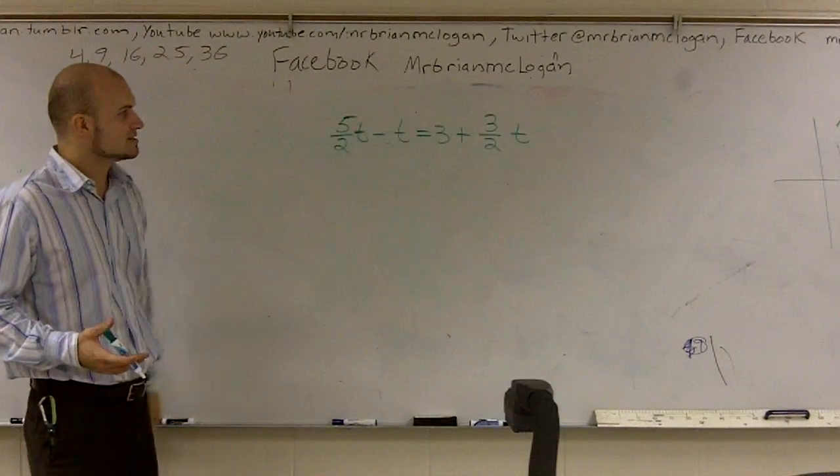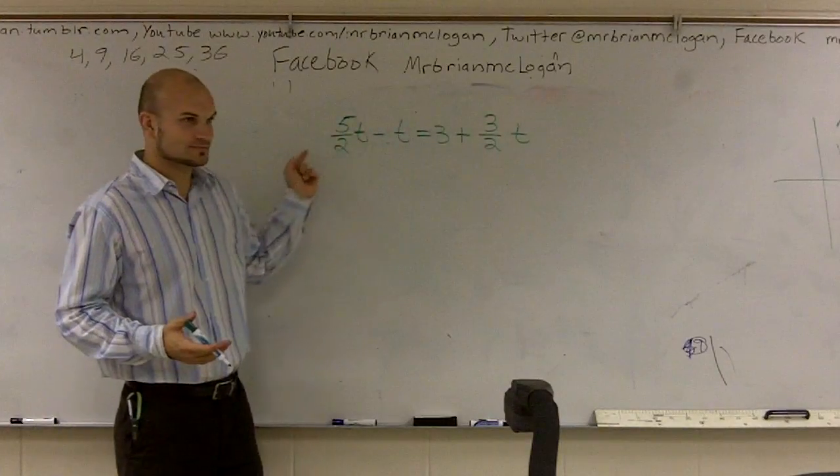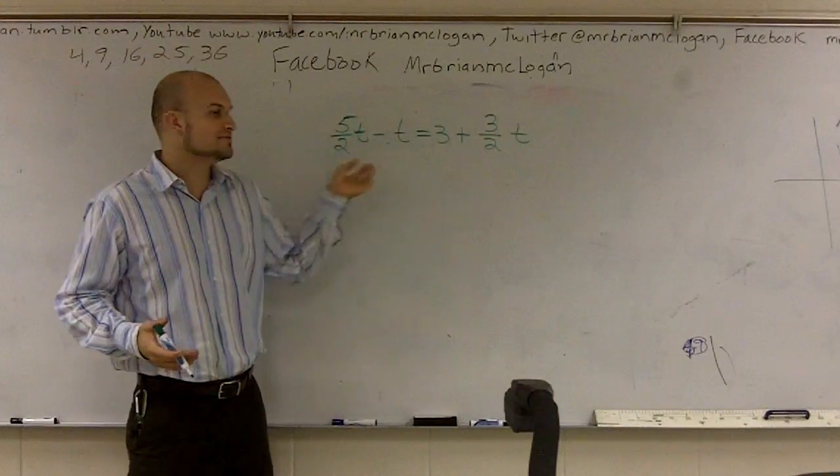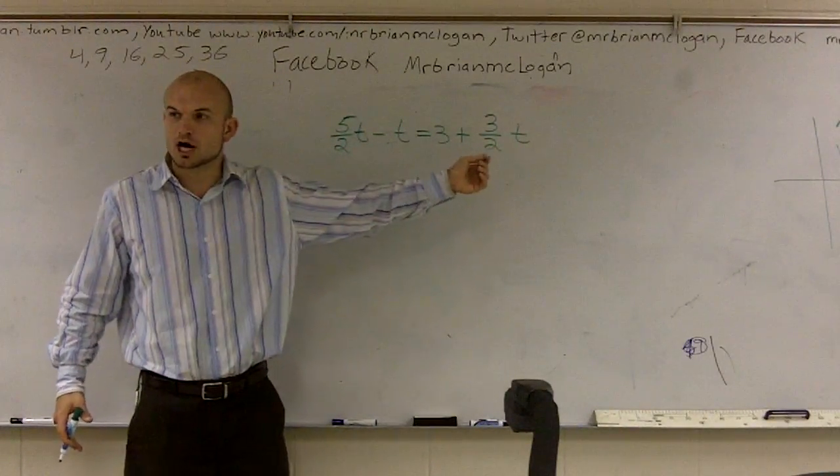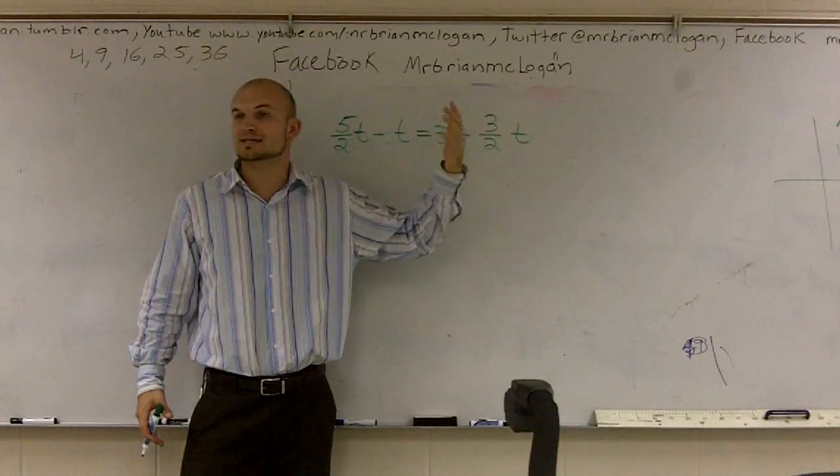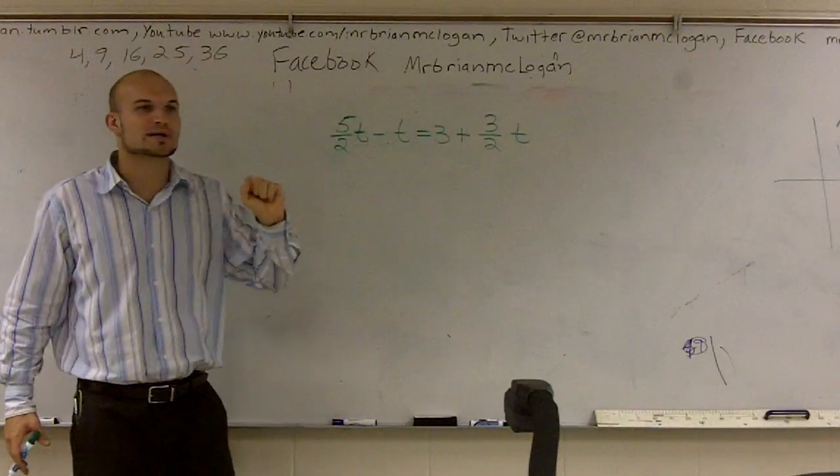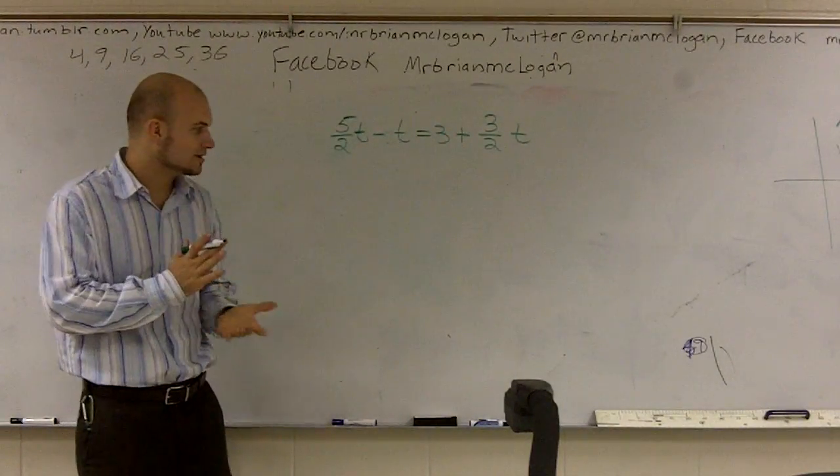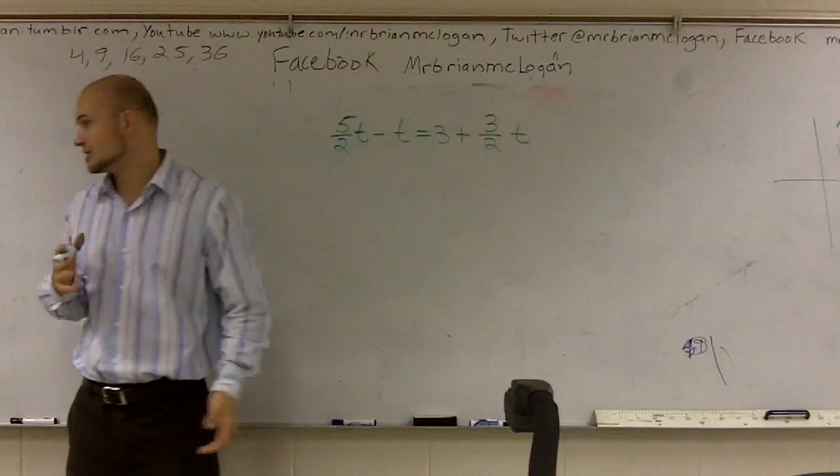So the way that we can get rid of fractions is look at our denominator. And if you have different denominators, then you're going to want to take the lowest multiple of those two denominators, what we call the least common multiple. And what we're going to do is we're going to divide every single number times our denominator or least common multiple.